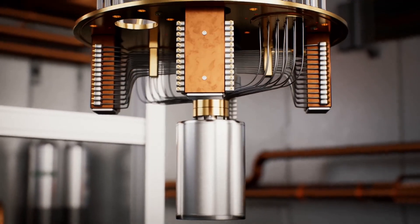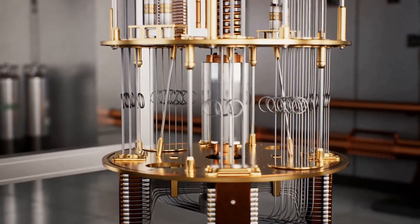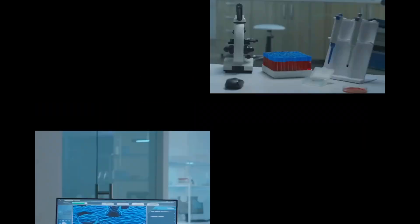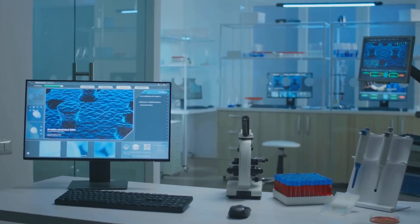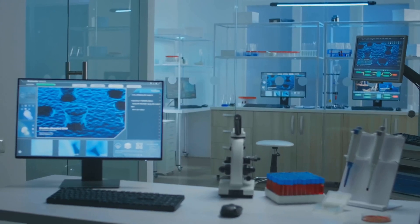Unlike classical computers that use bits, quantum computers use qubits. A bit can be either a zero or a one, but a qubit can be both at the same time thanks to a property called superposition. This allows quantum computers to process a vast amount of information simultaneously, making them incredibly powerful for certain types of calculations.